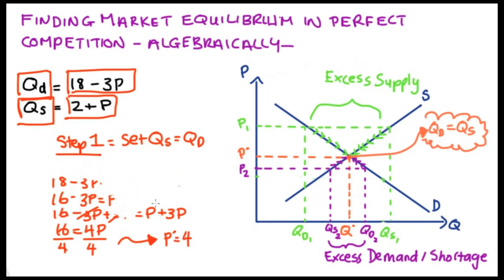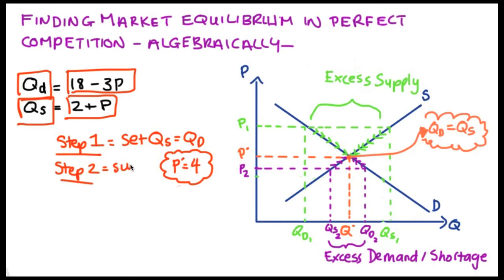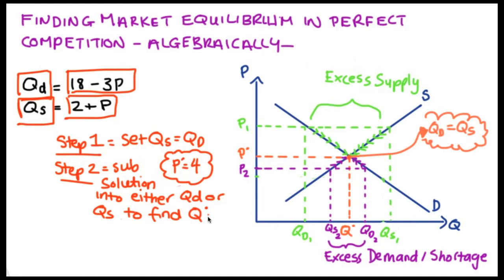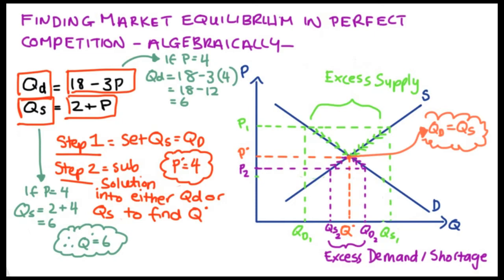We've got our equilibrium price — we're halfway there. Now that I've solved for equilibrium price, I'm going to substitute P equals 4 into either our demand or our supply curve. It doesn't matter which one, because at equilibrium they're equal to one another — let me prove that by substituting into both. For demand: quantity demanded equals 18 minus 3 times 4, which is 18 minus 12, which equals 6. For supply: quantity supplied equals 2 plus P, and P equals 4, so quantity supplied equals 6. So Q star equals 6, giving us our equilibrium points P star and Q star, the points where quantity demanded equals quantity supplied.